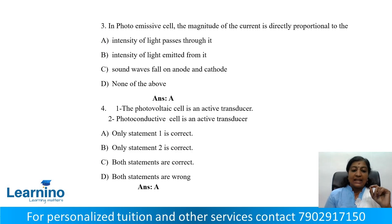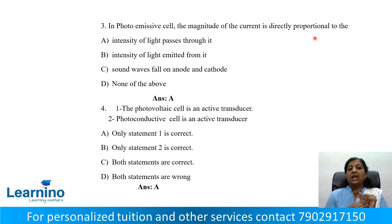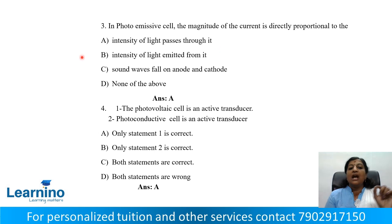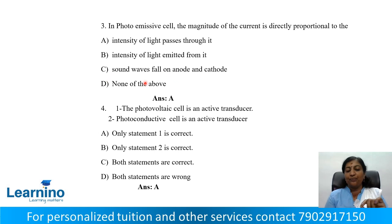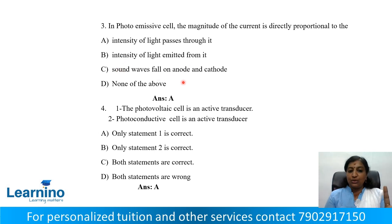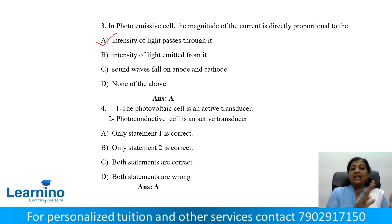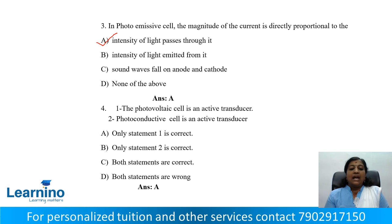Question number 3: In a photoemissive cell, the magnitude of current is directly proportional to what? Option A: intensity of light passes through it. Option B: intensity of light emitted from it. Option C: sound waves fall on anode and cathode. Option D: none of the above. The correct answer is intensity of light — option A.